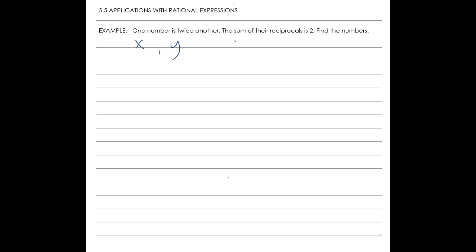One number x equals twice the other number, so we know x equals 2y, and y just equals y. Each of these values have reciprocals. The reciprocal of x is 1 over x, and the reciprocal of y is 1 over y. Since x equals 2y, the reciprocal of x will also equal 1 over 2y.